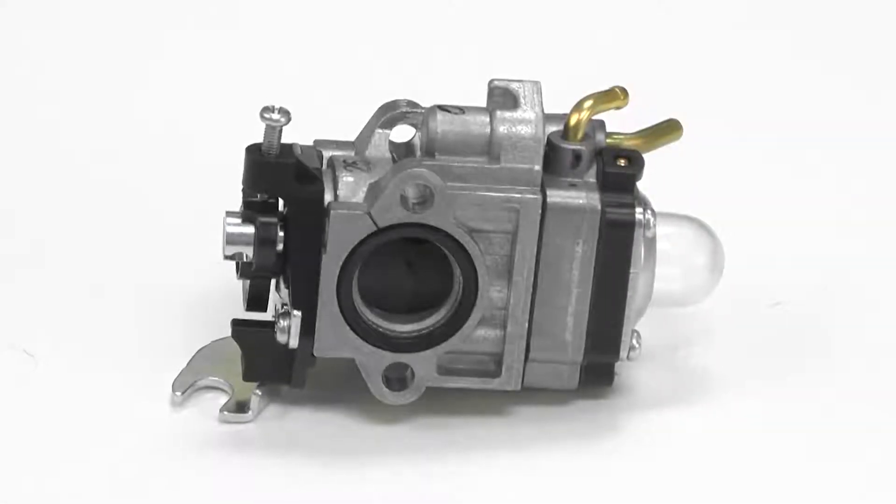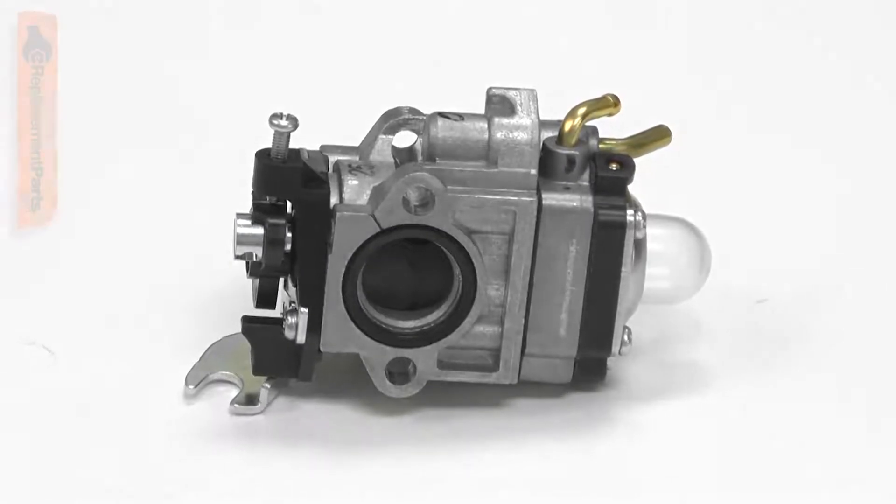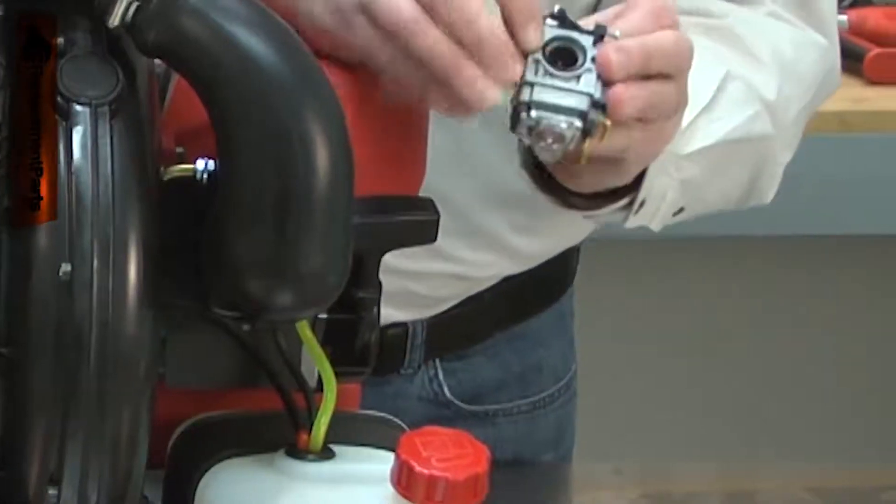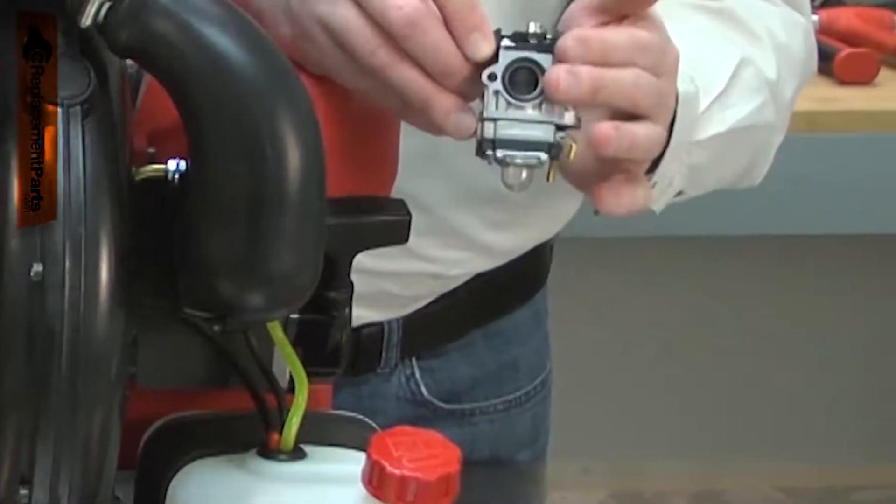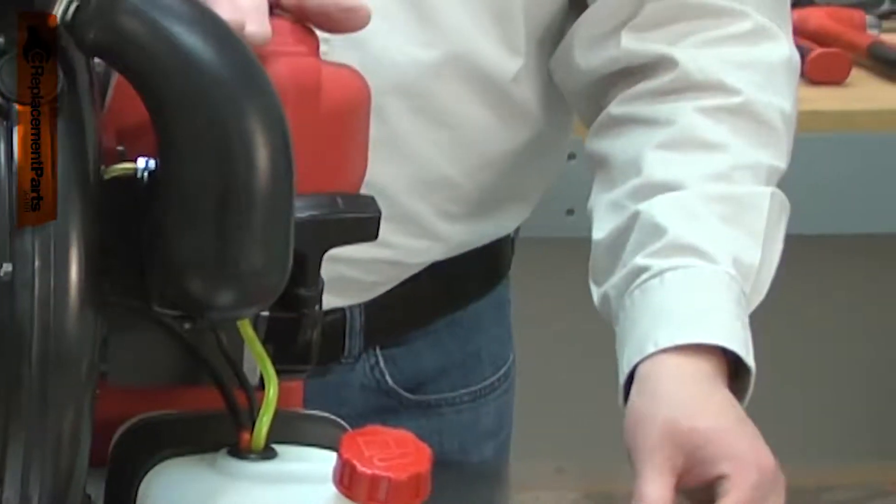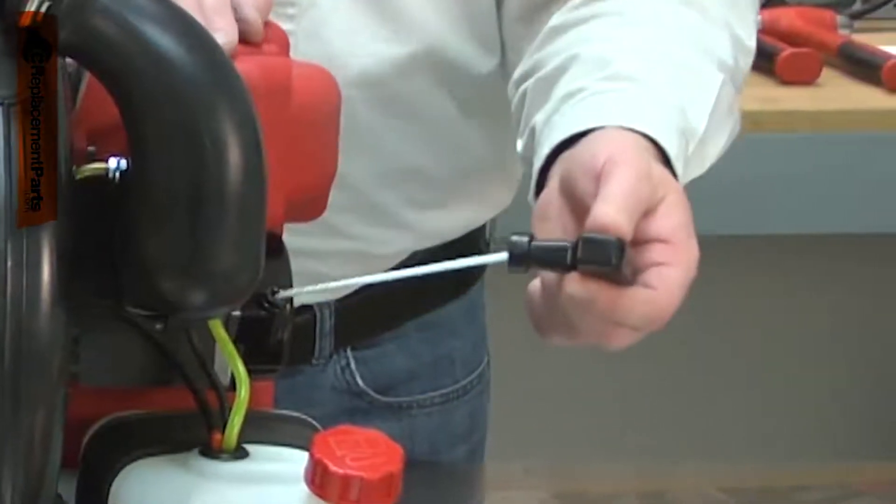The carburetor brings fuel and air together in the perfect ratio for combustion. The carburetor has many tiny passages that route the fuel. If dirt or corrosion plugs these passages, the engine will run poorly or not start at all.